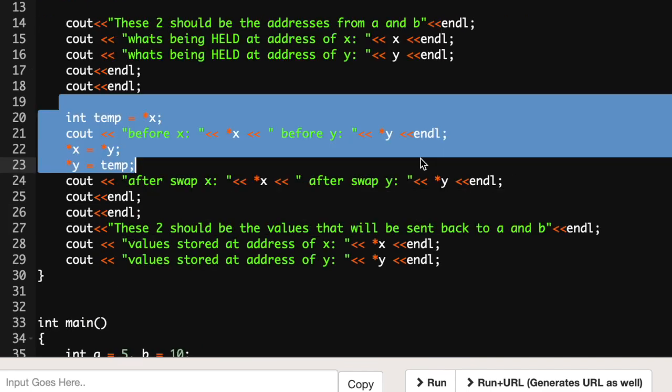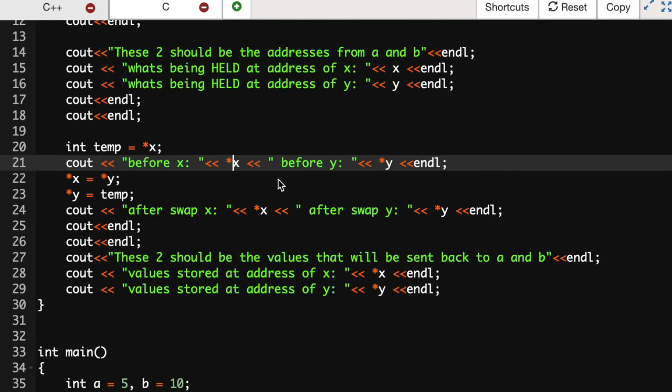Next I have in this highlighted section right here is where all of the work of the swapping is being done. We have our temporary integer being created and it's the pointer to x. I printed out right here what x and y are and what their actual values are.